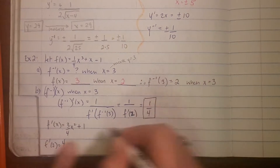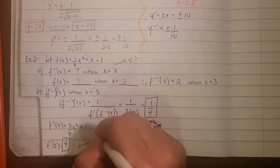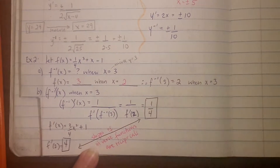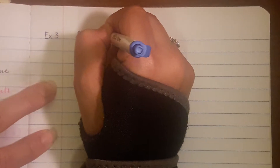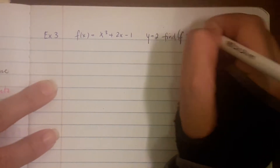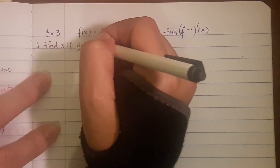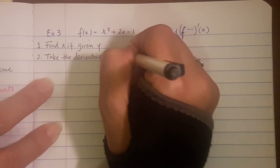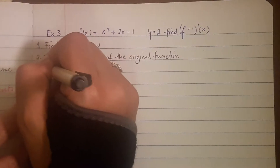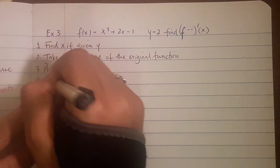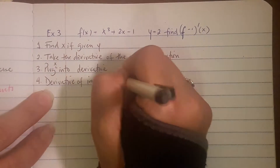Note that the slopes of the inverse functions are reciprocals — that's an important point and likely an AP-style question. Here are the steps: Number one, find x given y if needed. Number two, take the derivative of the original function. Number three, plug x into the derivative. Number four, the derivative of the inverse is the reciprocal.